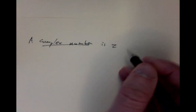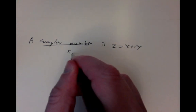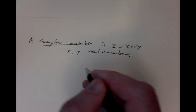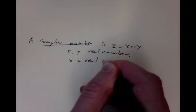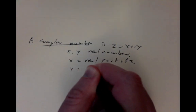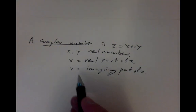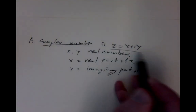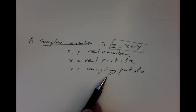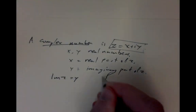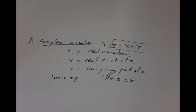A complex number is any expression of the form z equals x plus iy, where x and y are ordinary real numbers. The x is called the real part of z, and y is called the imaginary part of z. Note that both x and y are ordinary real numbers — the imaginary part is not i times y, but y itself. We use the notation Im(z) = y and Re(z) = x for the real and imaginary parts.